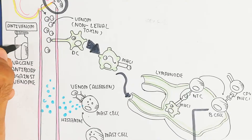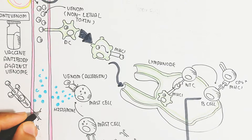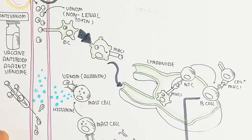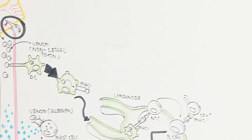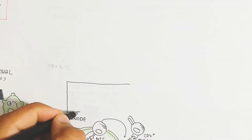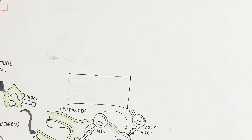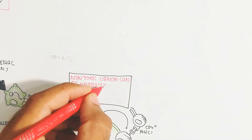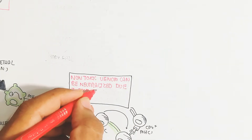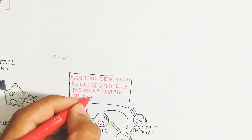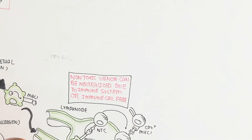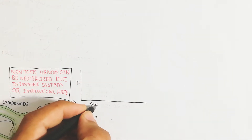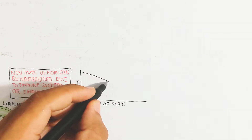If the snake's venom is highly poisonous, blood pressure becomes low. Antivenom contains antibodies directed against the venom. Non-toxic venom can be neutralized by the immune system if immune cells are functioning. However, if the immune system is overwhelmed by a cytotoxic venom, the immune cells will not work, allowing the poison to cause necrosis of all cells and kill the organism.